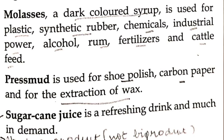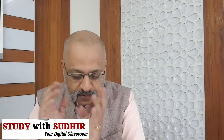Press mud is another byproduct used for shoe polish and carbon paper, and for the extraction of wax. Shoe polish and carbon paper both have very specific smells — both byproducts of the sugar industry from press mud. And sugarcane juice — though not exactly a byproduct but a product — is a refreshing drink, one of the tastiest drinks you can have in summer.